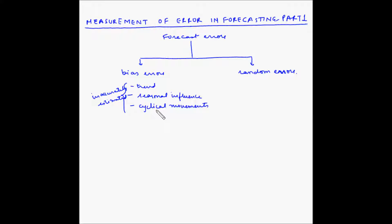For example, if the demand for grocery at a grocery store is steadily increasing, however the shopkeeper assumes the demand for last year as the forecast for this year, then the forecast for this year will always be lower than the actual demand because he did not take the trend into consideration. That is because of the bias error — he has not considered the trend.